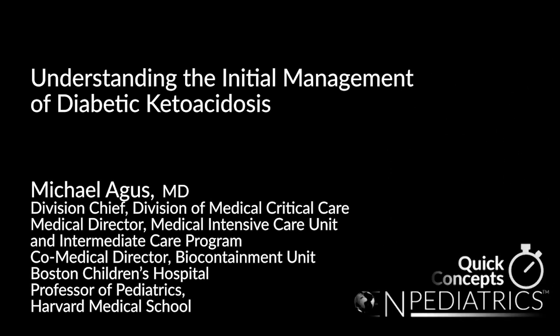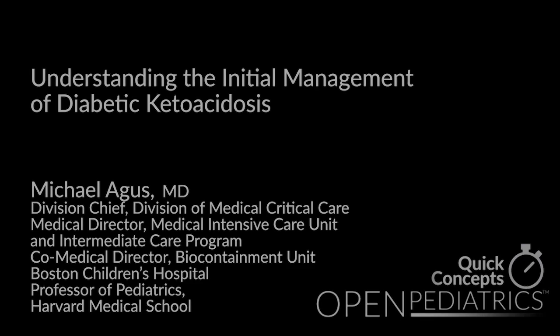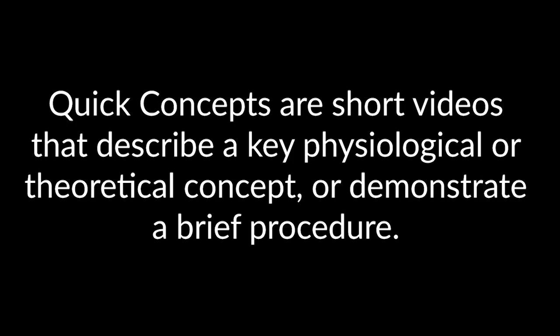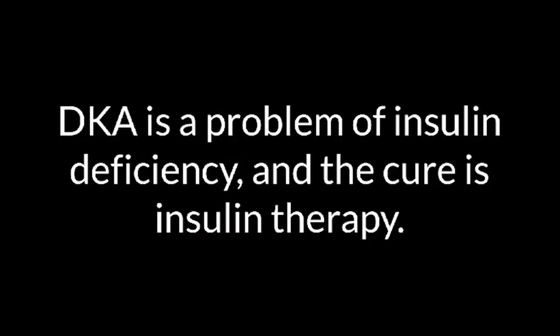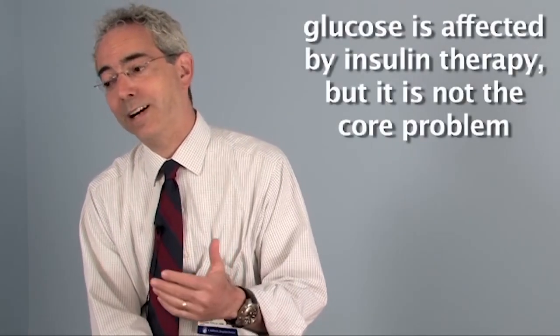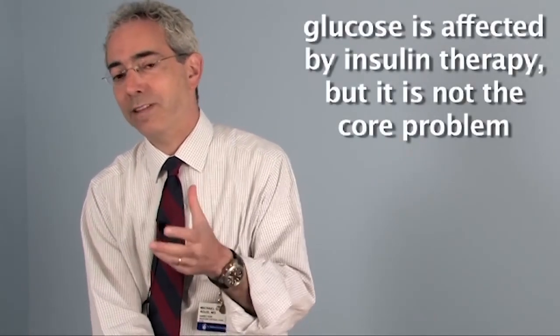Understanding the Initial Management of Diabetic Ketoacidosis, by Dr. Michael Agus. DKA is a problem of insulin deficiency. The cure for DKA is insulin therapy. Glucose is really an innocent bystander — it's affected by insulin therapy, but it's not part of the problem. The problem is insulin deficiency, and we need to correct that problem.